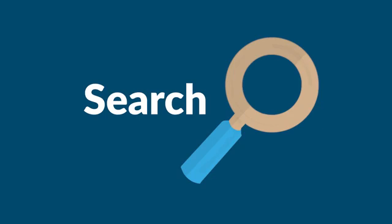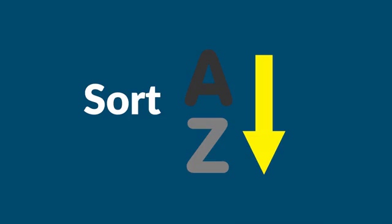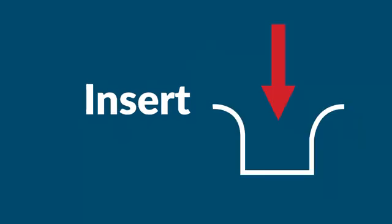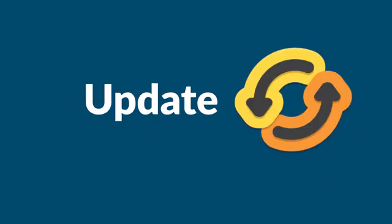Search is an algorithm to search an item in a data structure. Sort is an algorithm to sort items in a certain order. Insert is an algorithm to insert an item in a data structure. Update is an algorithm to update an existing item in a data structure. And delete is an algorithm to delete an existing item from a data structure.